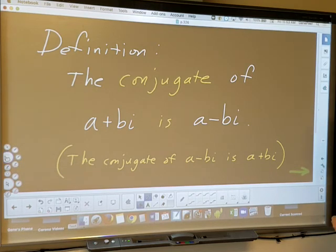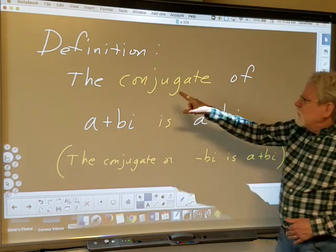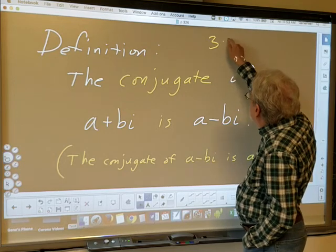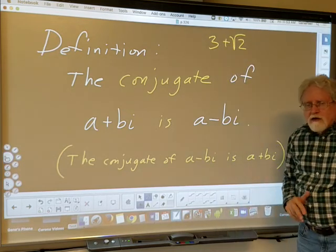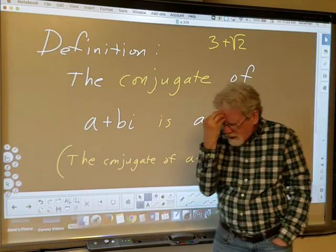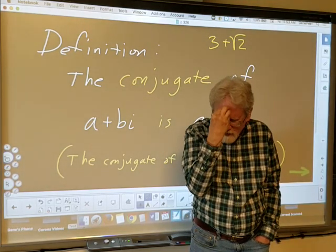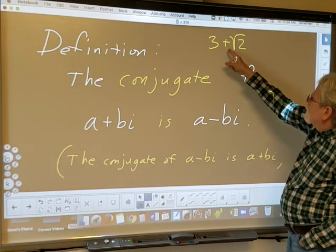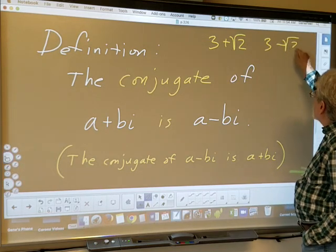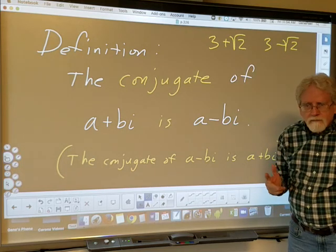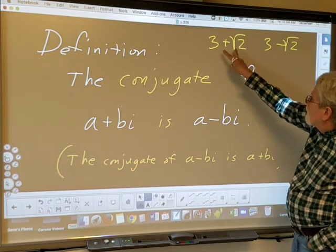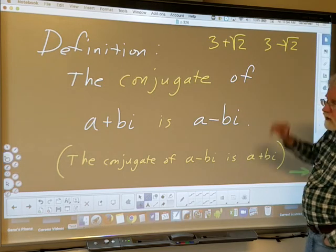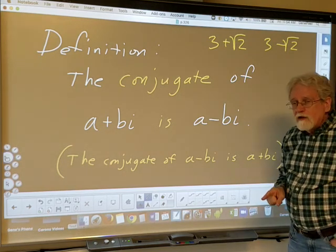New definition: conjugate. We've seen that word before — when working with numbers like 3 + √2, the conjugate of 3 + √2 is 3 − √2. To form the conjugate, you just change the sign. We used that because multiplying an irrational number by its conjugate always turned out to be rational.